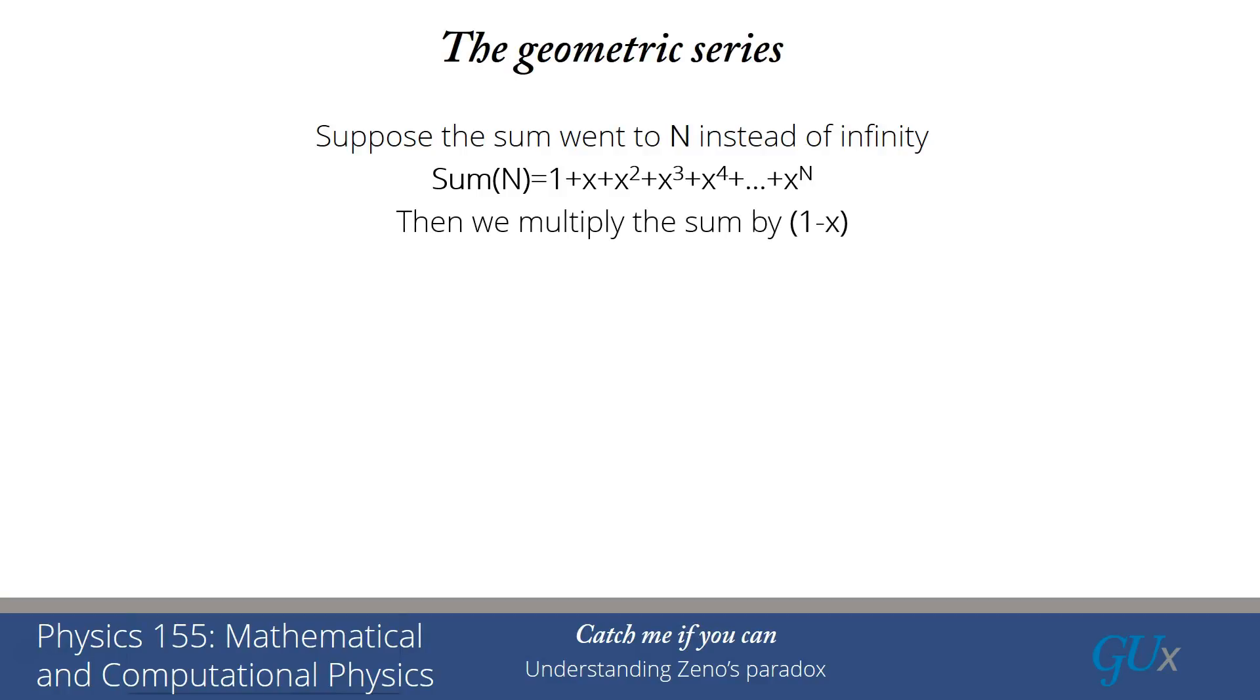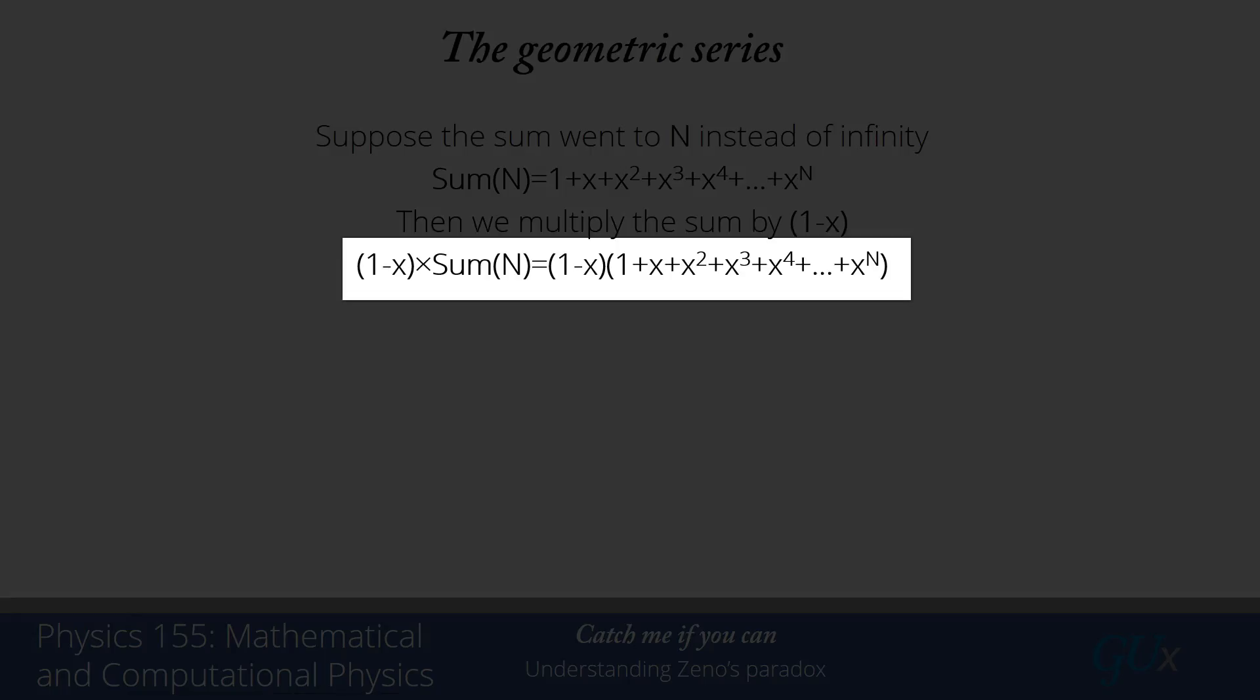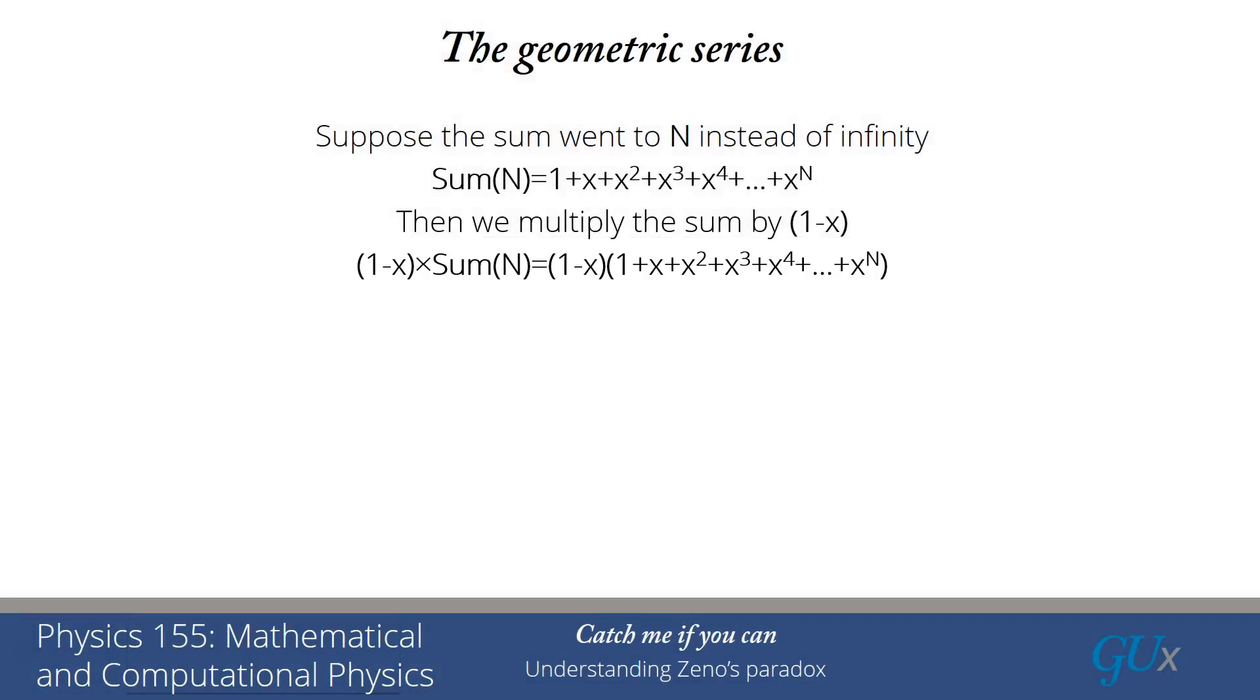Now here comes the trick for how we solve this problem. What we're going to do is we're going to multiply the sum by 1 minus x. We have to do that multiplication on both sides. Of course, on the left hand side it does nothing. It just sits there. But on the right hand side I now have two terms. Let me distribute the 1 minus x over the rest of the terms. So 1 times that series is going to just give the series again. But minus x is going to give me a minus x minus x squared all the way out to minus x to the n plus 1.